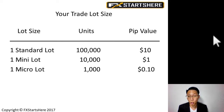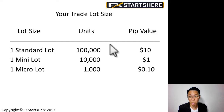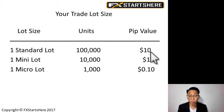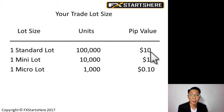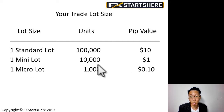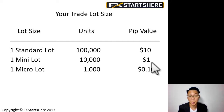So what lot size are we going to use for our trade? It depends on your pip cost. If you're trading one standard lot — that's 100,000 units — the pip value is $10 per pip. So if you make 20 pips, that's $200; 50 pips is $500; 100 pips is $1,000. If you're trading one mini lot — that's 10,000 units — your pip value is $1. So if you make 50 pips, that's $50 profit; if you lose 20 pips, that's a $20 loss.